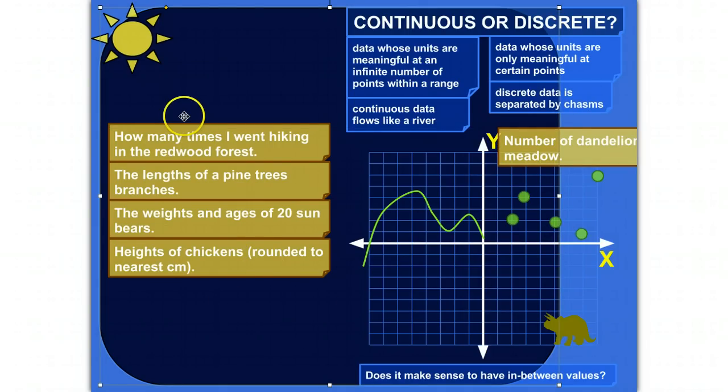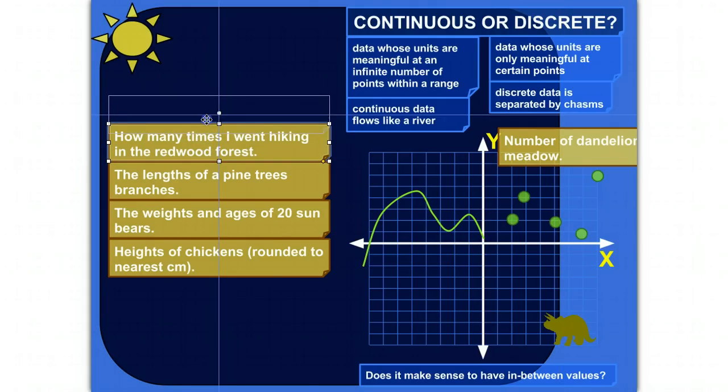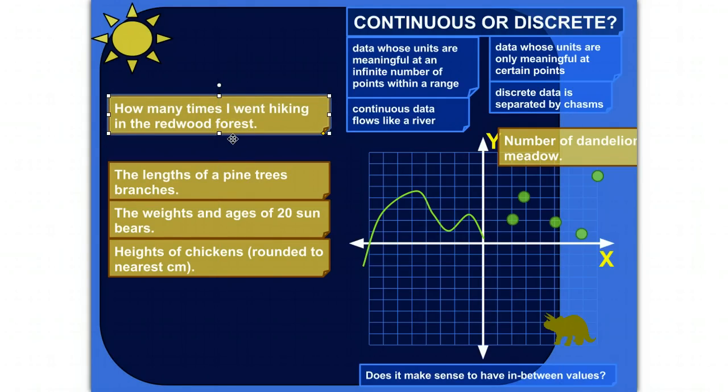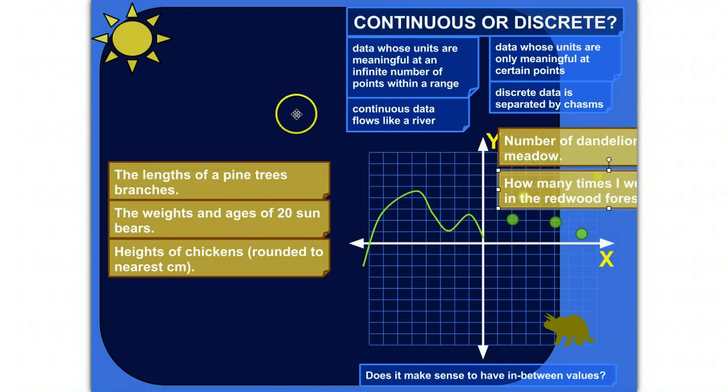Okay, how about how many times I went hiking in the redwood forest? Similarly, you're counting something. I could go one time, I could go two times. Does it make sense to have in-between values? Could I go hiking 1.787 times? You could argue that I could go one and a half times, like I started to go but didn't end up going. But it wouldn't make sense to say I went 1.6823789 times. There's only certain values that will make any sense if you're measuring how many times I went hiking in the redwood forest. So that would be an example of discrete data.